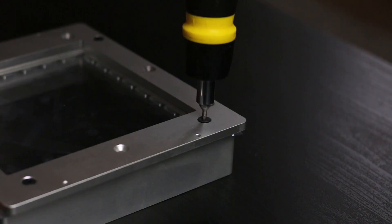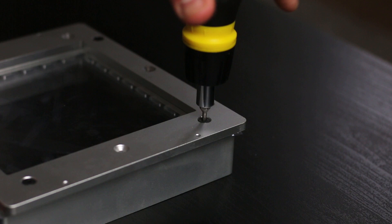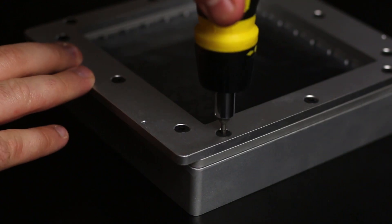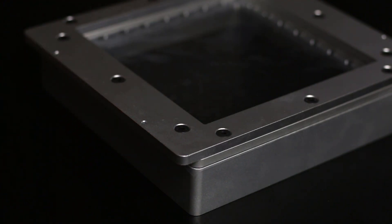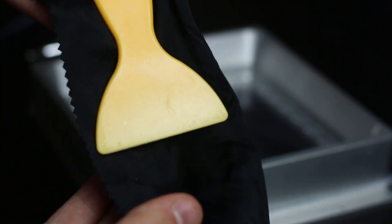Once again, work your way around, do each corner with the screws first, and then when that's all done and they're all nice and tight you can put the rest in. Make sure they're all nice and tight throughout and use the cloth and the scraper provided.